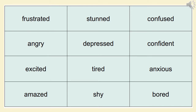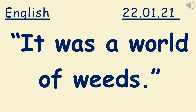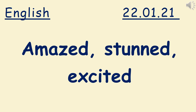Here are some emotions: frustrated, stunned, confused, angry, depressed, confident, excited, tired, anxious, amazed, shy, and bored. I'm going to read this line again, but this time using different emotions, and I'd like you to try and guess what emotion I'm trying to convey. 'It was a world of weeds.' That's right — I was trying to convey amazed, stunned, or excited.